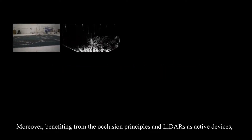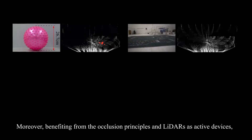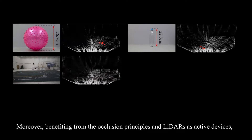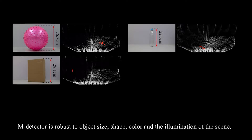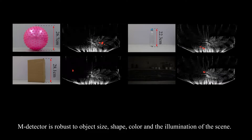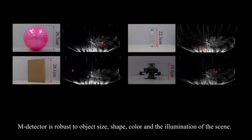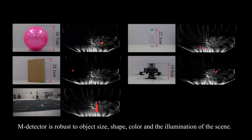Moreover, benefiting from the occlusion principles and LiDARs as active devices, MDetector is robust to object size, shape, color, and the illumination of the scene.